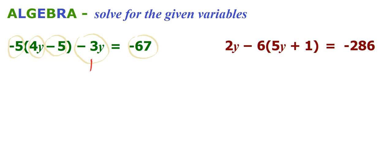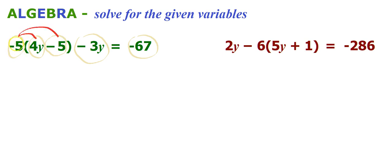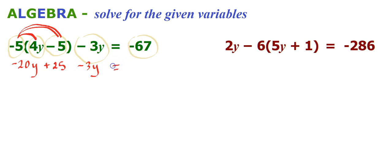We have to rename all the left-hand side of this equation so that it doesn't have the brackets. Whatever term is outside the brackets, we multiply it by each of the terms inside the brackets. So we've got minus 5 times 4y, which is minus 20y. And we've got minus 5 times minus 5, which is positive 25. So the brackets are now gone, and we just bring down this minus 3y — we haven't touched that yet. And we bring down minus 67 as well.